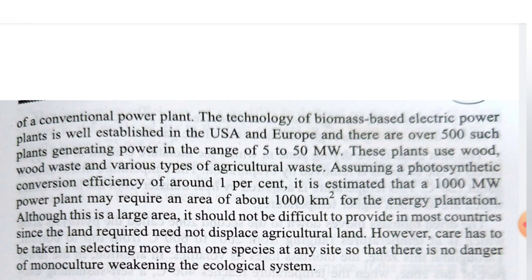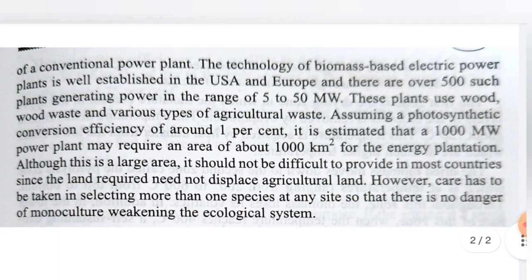The plants use wood, wood waste, and various types of agricultural waste. Assuming a photosynthesis conversion efficiency of around 1%, it is estimated that a 1000 megawatt power plant may require an area of about 1000 km² for the energy plantation. Although this is a large area, it should not be difficult to provide in most countries since the land required need not displace agricultural land. However, care has to be taken in selecting more than one species at any site so that there is no danger of monoculture weakening the ecological system.